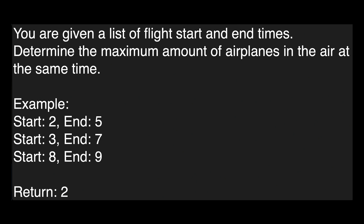The problem that I was given: you are given a list of flight start and end times. Determine the maximum amount of airplanes in the air at the same time. In the example provided, we have three flights with start and end times. The first flight takes off at time 2 and lands at time 5. The second starts at time 3 and ends at time 7. The third has a start time of 8 and end time of 9. We return two, because when the second plane takes off at time 3 the first plane is still in the air — so at that point we have two planes in the air. When the third plane starts, both previous planes have landed, so we only have one. Our maximum is two.